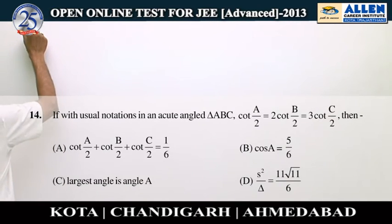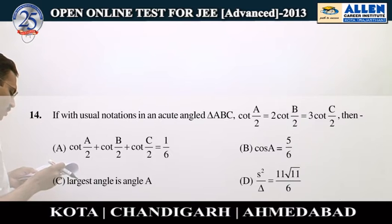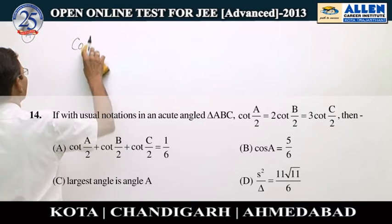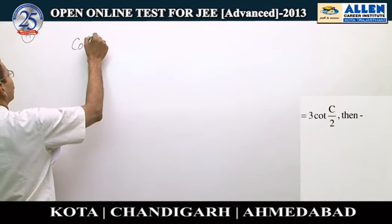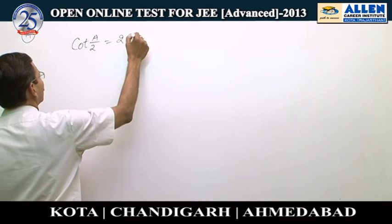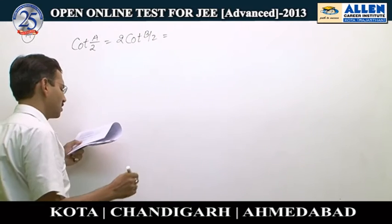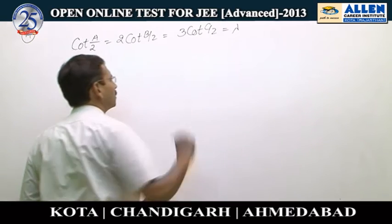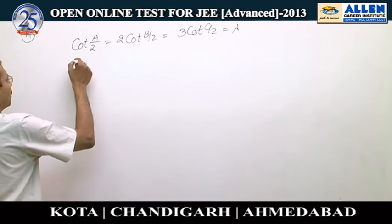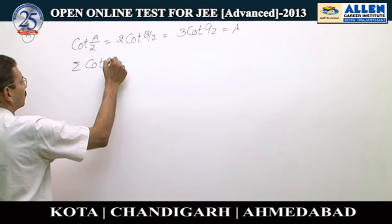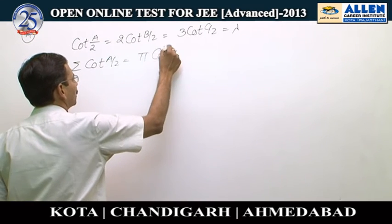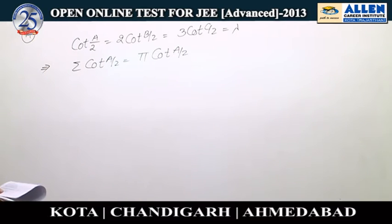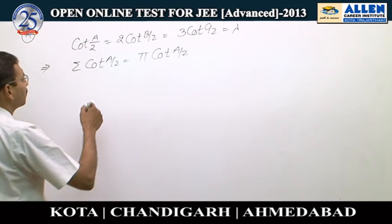Question number 14. Let us assume these three quantities are equal to lambda: cot(A/2), then cot(B/2)/2 = lambda implies 2 cot(B/2) = lambda... wait — cot(A/2) = lambda, cot(B/2)/2 = lambda, and cot(C/2)/3 = lambda. We know the identity that the sum of cot(A/2) equals the product of cot(A/2) for a triangle where A + B + C = 180°. Therefore, we can apply this rule to find lambda.